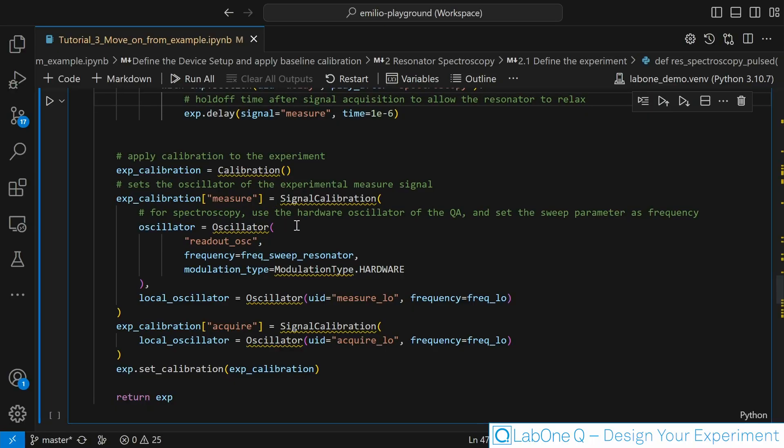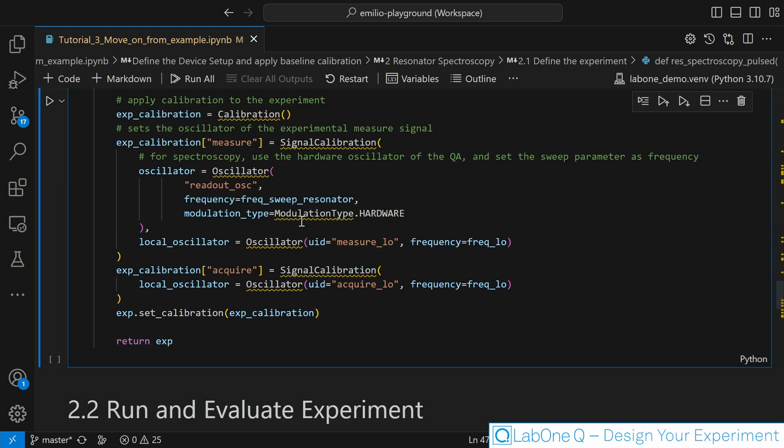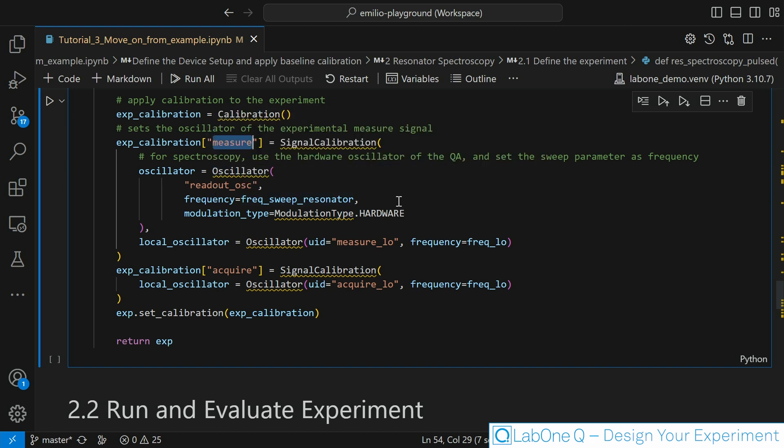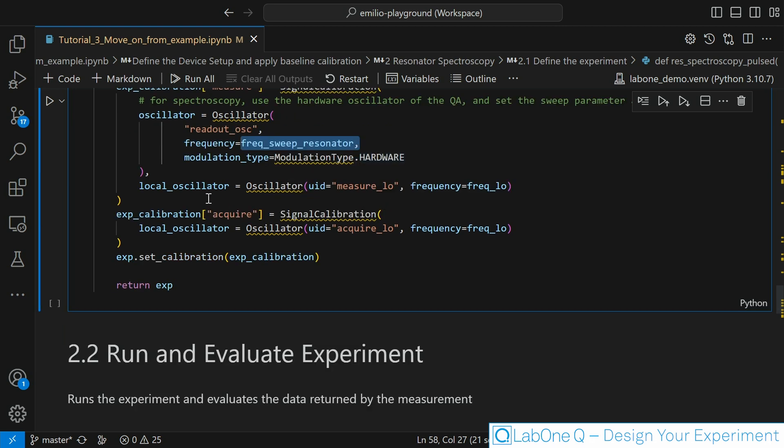Last thing I need to do is to calibrate the experimental line that I am using in this experiment. Here for example in the measure line I am passing this oscillator. Since I want this oscillator to change at each step of the sweep I actually use as a frequency our frequency sweep resonator. This means that the frequency will change at each step of the sweep loop. As a modulation type I am using the hardware. And as you can see as a central frequency I pass this frequency alone. I am setting the same frequency alone also for the acquire line since I want to demodulate at the exactly same central frequency that we use for the measure line.